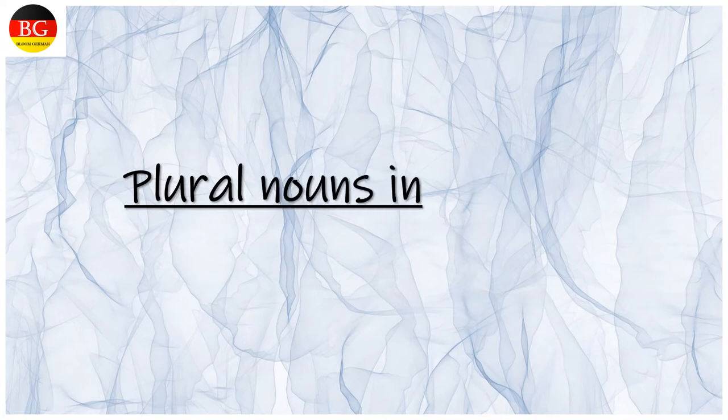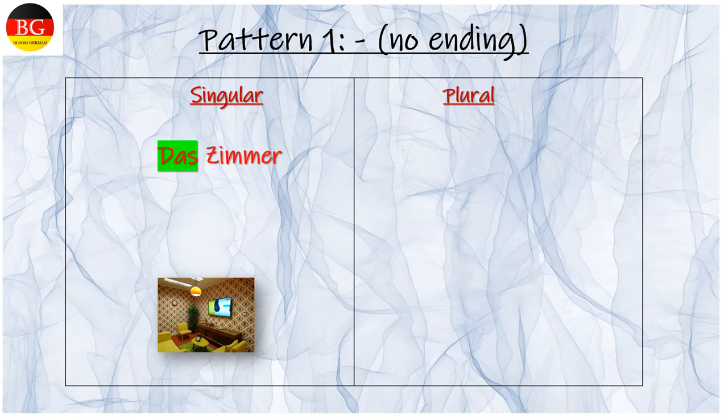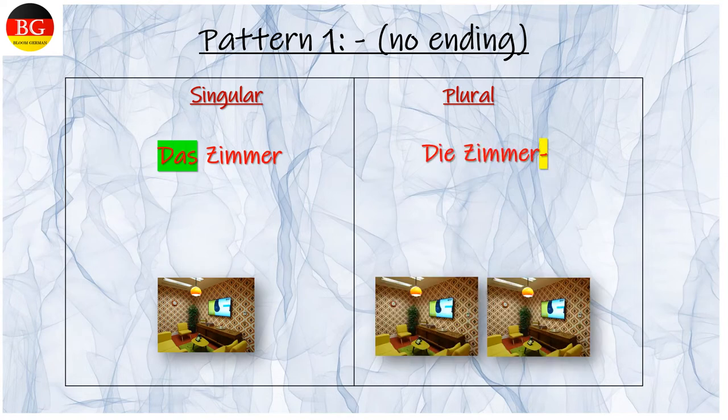Plural nouns in German. Pattern 1: No ending. Das Zimmer, die Zimmer. The rooms. No ending. Definite article changes from das to die.